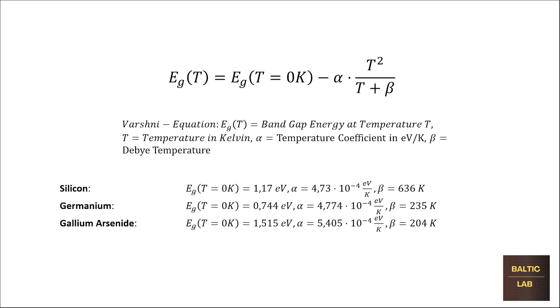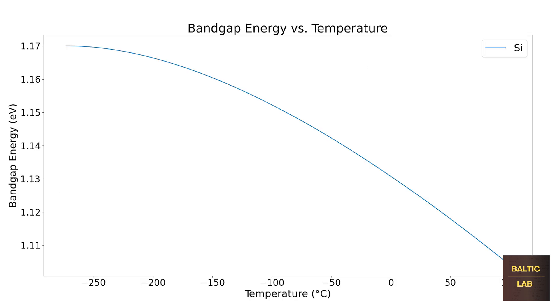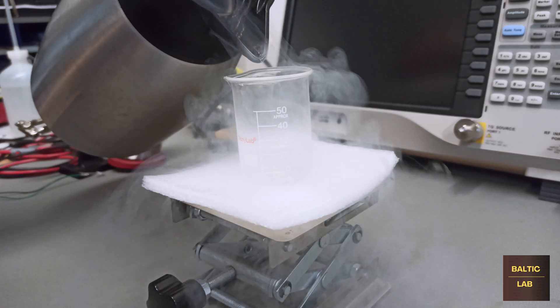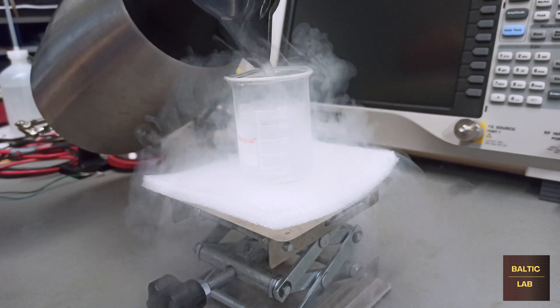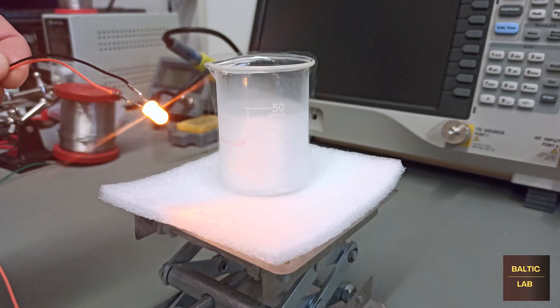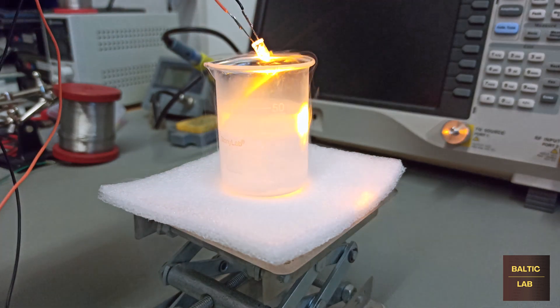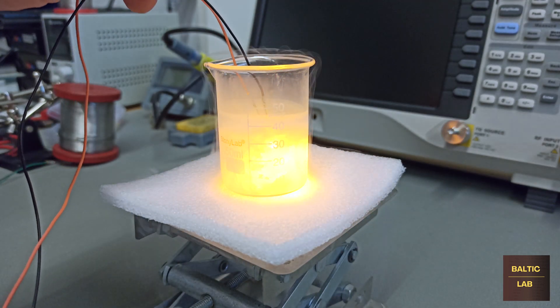This change in energy levels is usually so small that it cannot be observed as an apparent change in color in the normal operating temperature range. With a temperature of minus 196 degrees Celsius or minus 320 degrees Fahrenheit, liquid nitrogen is more than capable of causing an energy shift that is large enough to be visible for the human eye.